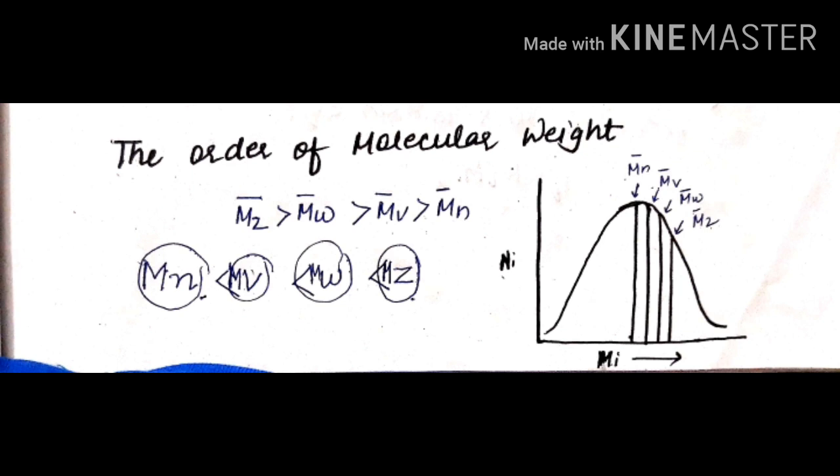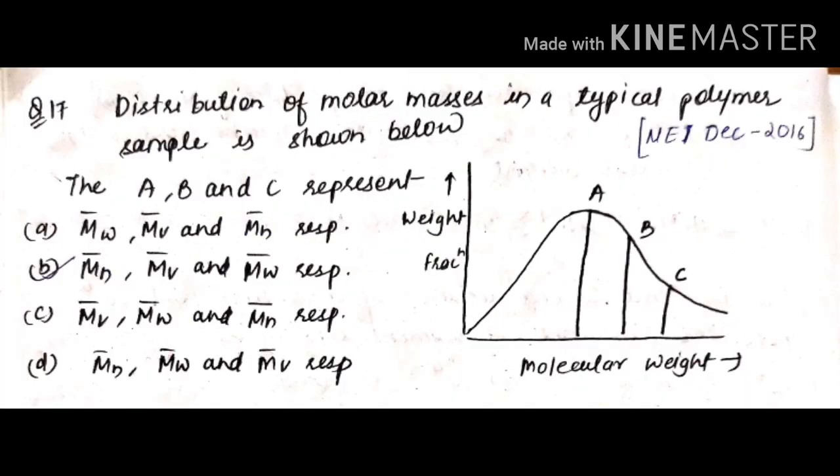So the answer will be B. Here C should be the highest. The molecular weight is highest for MW among MN, MV, and MW — with MW the largest, then MV, then MN.